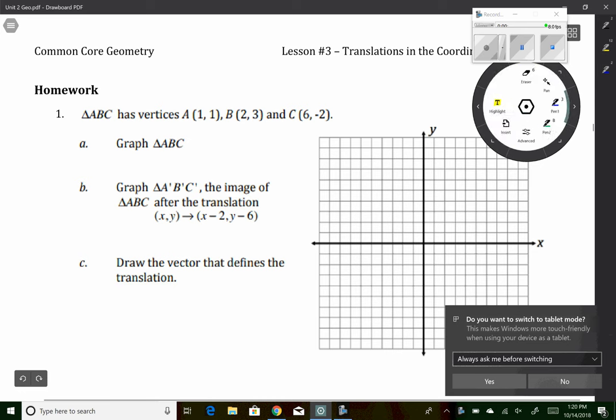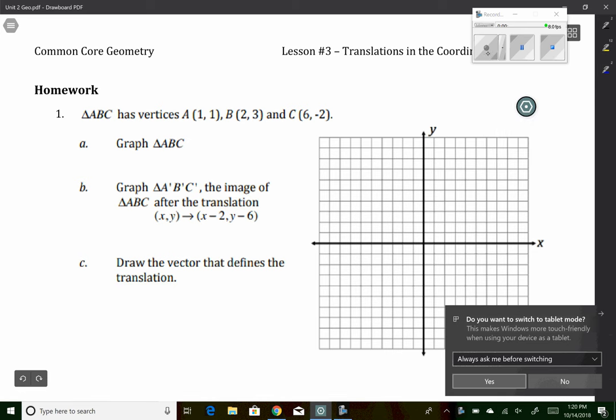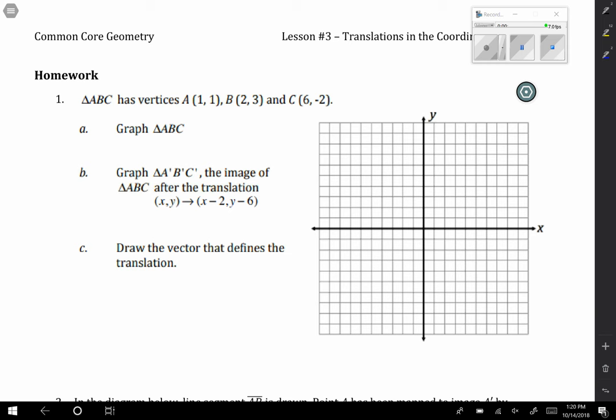So let's first start by graphing the triangle. Whenever we're graphing points, remember the first thing is the x coordinate, the second thing is the y coordinate. So I'm going to go to the right one, up one, that's point A. To the right two, up three, that's point B.